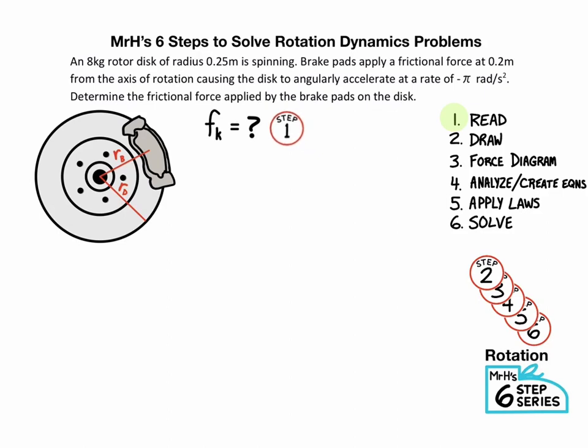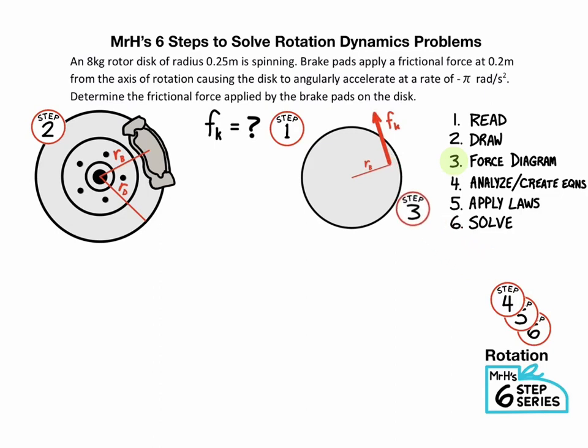Step two, draw a picture. So draw a rotor with pads. Step three, free body diagram. Again, make sure to draw your forces from the place that they're applied. Don't just draw a dot anywhere. In this case, the brake pads are .2 meters away, so we're going to start our friction vector at a radius of .2, not all the way to the edge.